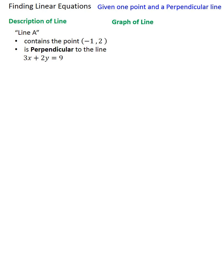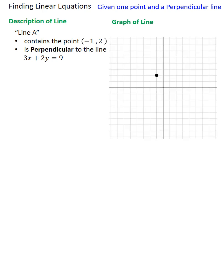So first let's graph the line. Well, here's the point (-1, 2), which we know the line that we want contains. So we're looking for some line that goes through that point. But we know that it has to be perpendicular to the line 3x + 2y = 9. The line 3x + 2y = 9 turns out to be right here.